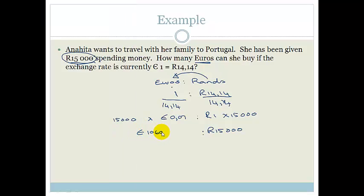1,060.82 Euros. So Anna Hitta, for her 15,000 Rand, gets 1,060.82 Euros.